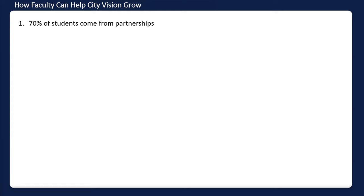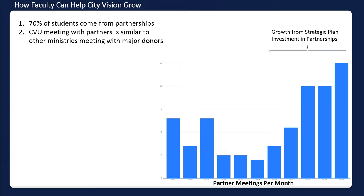Many of you are very connected with organizations and may know people who have a lot of influence. For a lot of you who work in nonprofit organizations, the way nonprofits are growing these days is through meetings with major donors. For us, meetings with other ministries and nonprofits is the equivalent of that. In our strategic plan this past year, one of the big focus areas was to grow our number of partner meetings per month — at the peak, we're having 25 partner meetings per month. That's been one of the big investments, and we're going to continue to try to grow that. One of the best ways we can do that is with faculty, so who are the types of organizations you can connect us with?